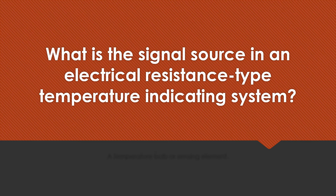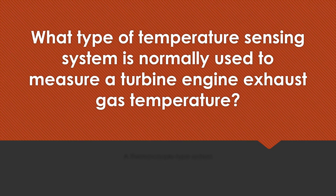What is the signal source in an electrical resistance type temperature indicating system? A temperature bulb or sensing element. What type of temperature sensing system is normally used to measure a turbine exhaust gas temperature?